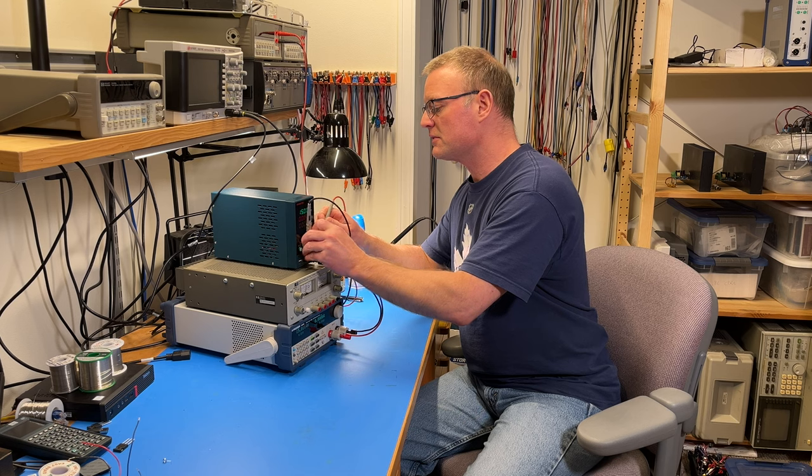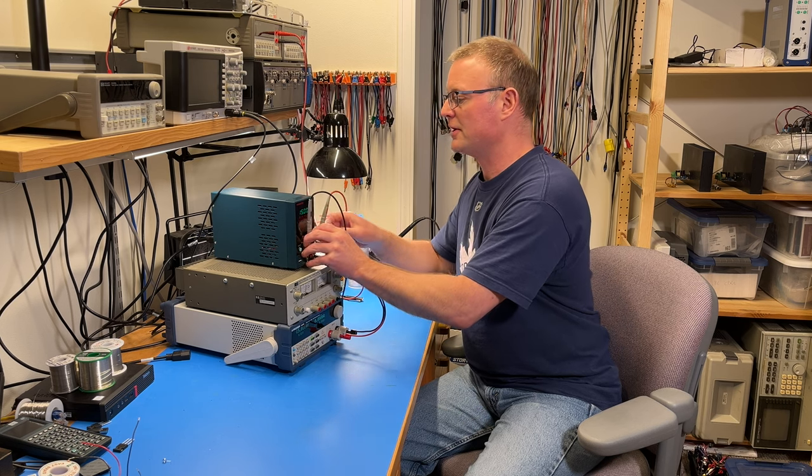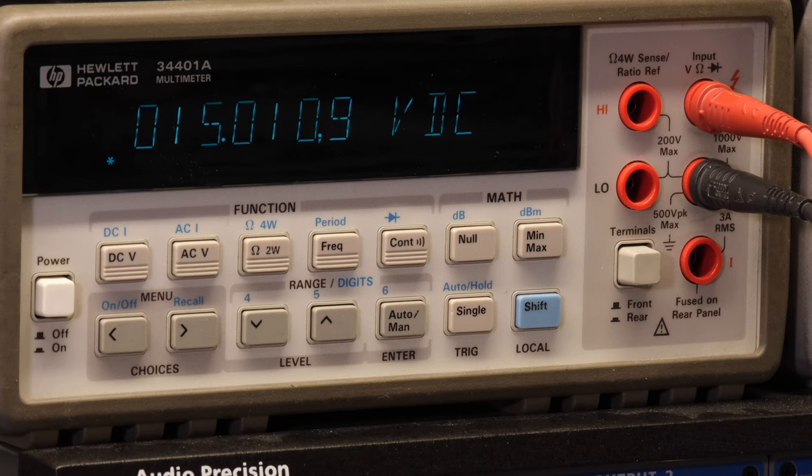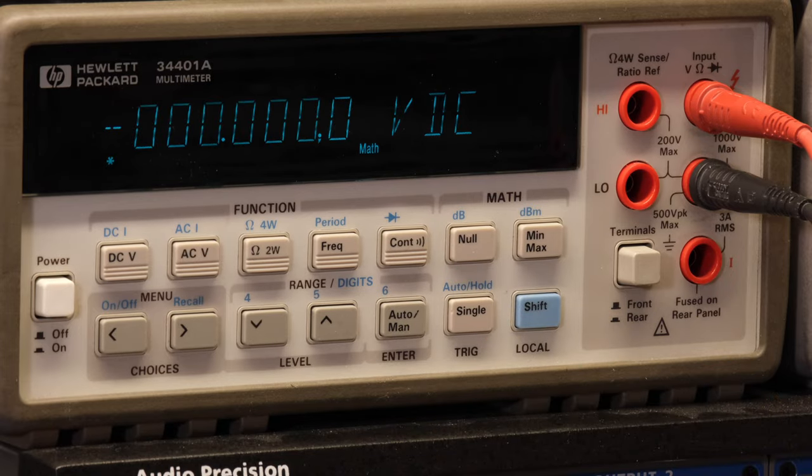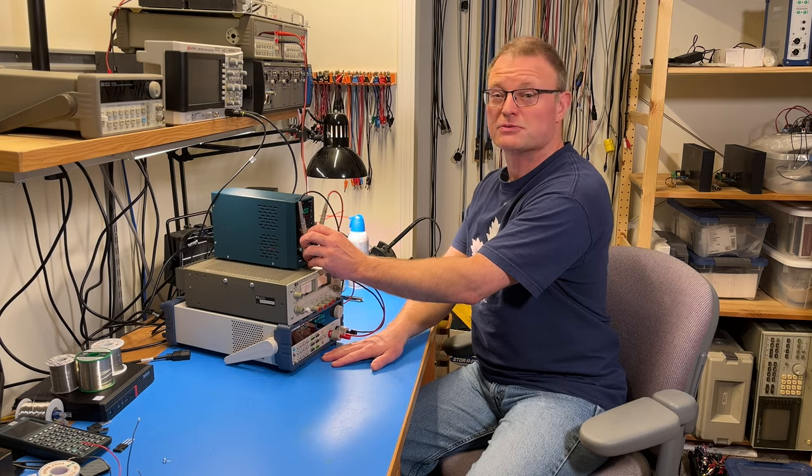To prevent the contact resistance of these banana plugs from interfering with the measurement, I will be measuring directly at the output terminals with these probe leads. So now let's look at the output of the Hanmatech power supply. And this is with the load turned off. We can see it provides 15.01 volts. And now let's turn the load on. And it looks like the output voltage dropped by about two and a half millivolts. In fact, let's let the meter do the math for us by hitting the null button.